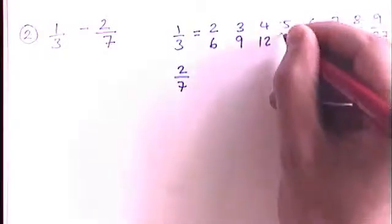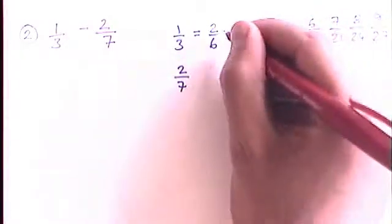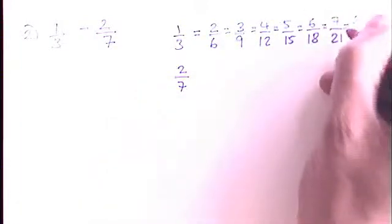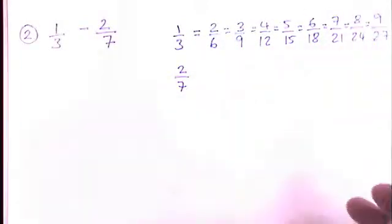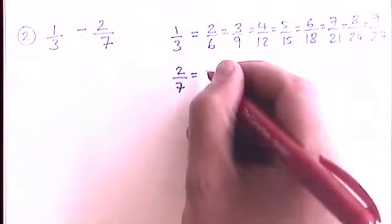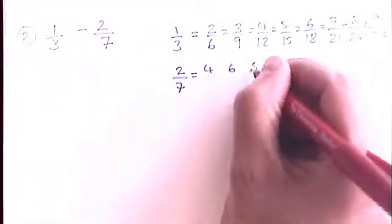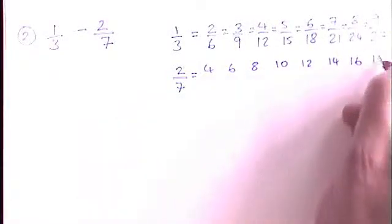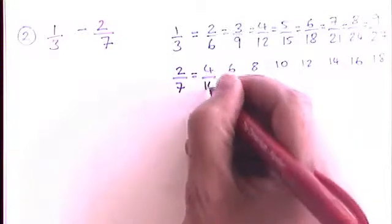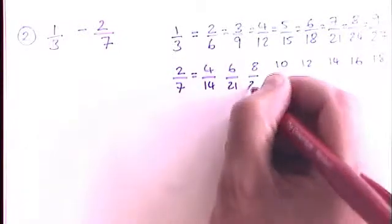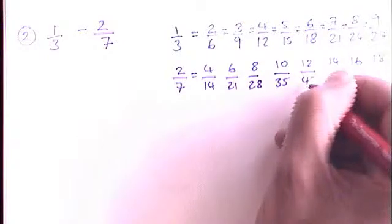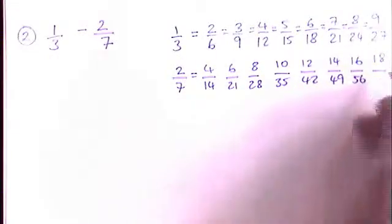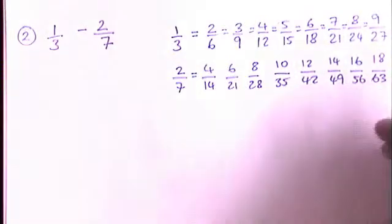Like that. And I'm counting up in threes on the bottom of the fractions for the denominators. And those are all my fractions that are the same as one-third. So I write a little equals in between them to say they're the same. And then I'm going to do the same for this two-sevenths. So going up in twos you get four, six, eight, ten, twelve, fourteen, sixteen, eighteen. And going up in sevens, fourteen, twenty-one, twenty-eight, thirty-five, forty-two, forty-nine, fifty-six, sixty-three.